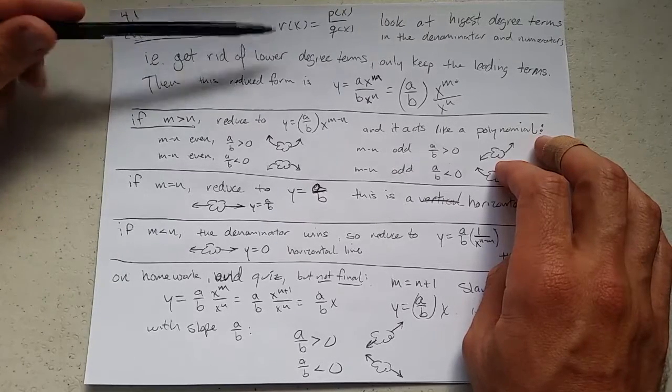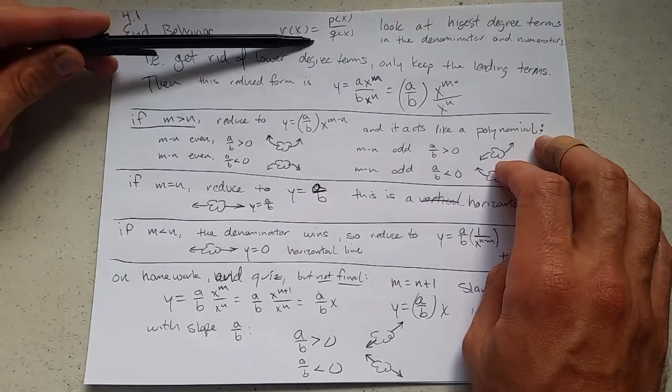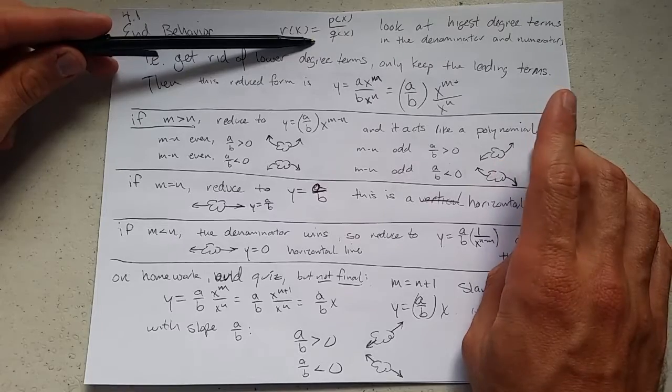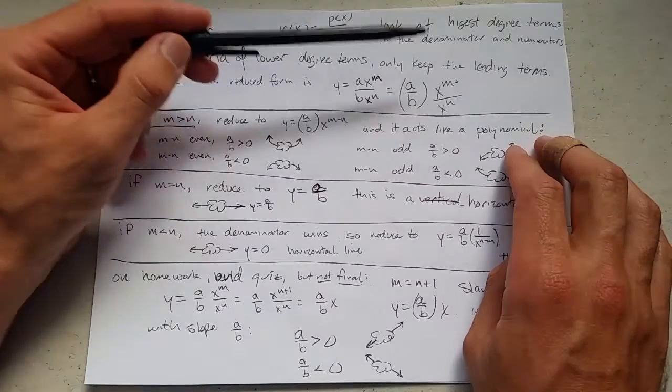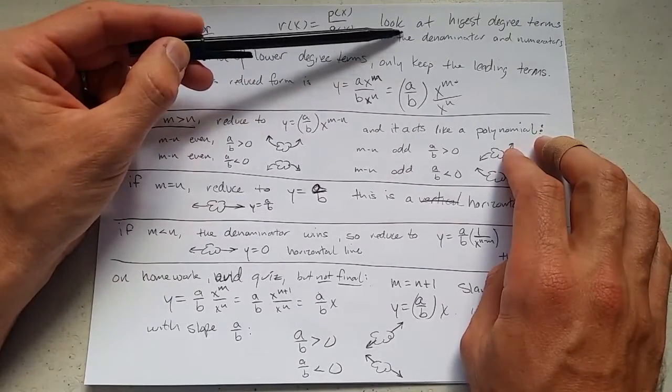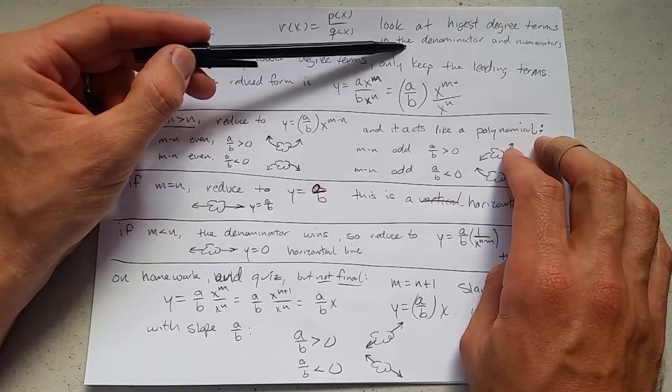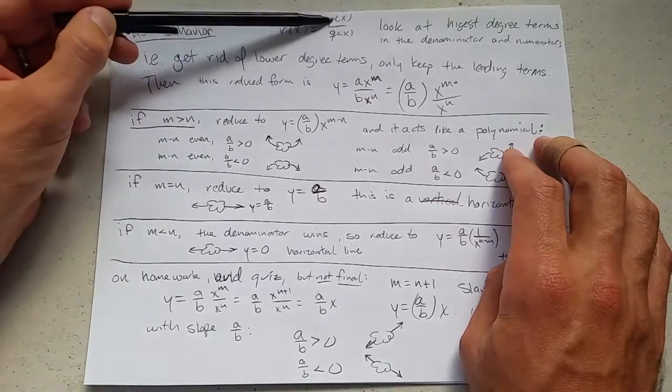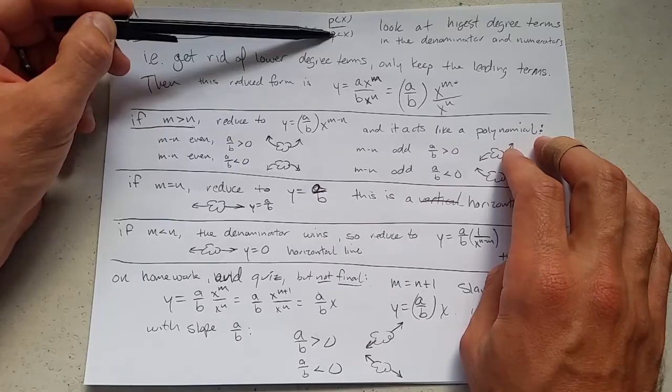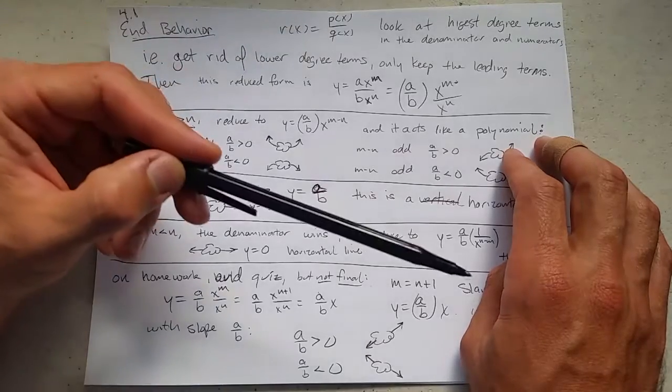Alright, end behavior. You have your rational function. You're going to look at, just like polynomials, the highest degree, but you look at the highest degree in the numerator and the highest degree in the denominator. And you want to pick out the highest degree term in the numerator and the highest degree term in the denominator, and then basically throw out everything else.